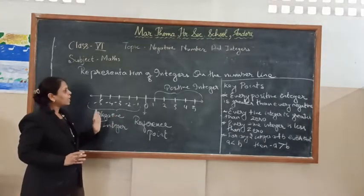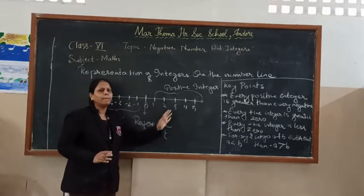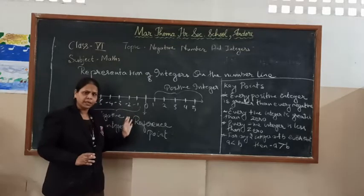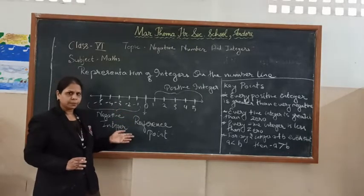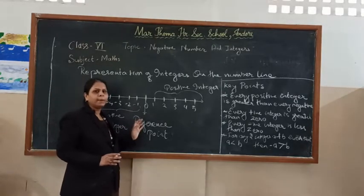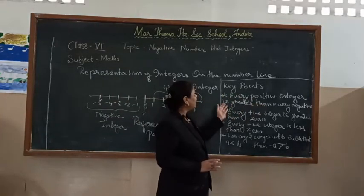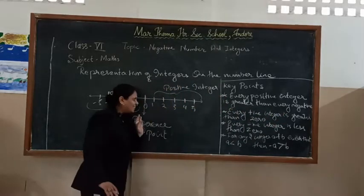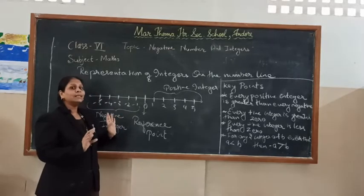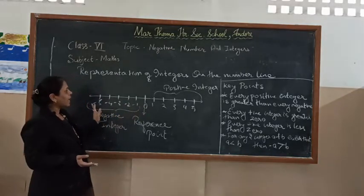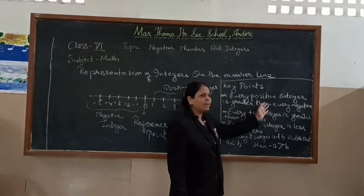As we can easily see, when considering positive and negative integers, the number coming to the right is greater than the number coming to the left. From this observation, we can draw a conclusion: the first key point is that every positive integer is greater than every negative integer. All negative numbers come on the left-hand side, and positive numbers are on the right-hand side — hence every positive integer is greater than every negative integer.